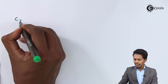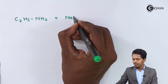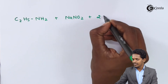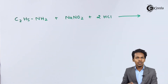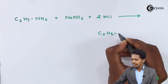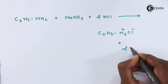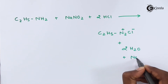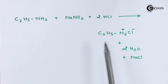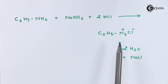For example, consider C2H5NH2, known as ethanamine. If we treat it with NaNO2 and two moles of HCl, HNO2 will be produced in the reaction itself, and the NH2 group will be converted into N2+Cl-. The byproducts are two moles of H2O and NaCl. The product formed is ethyl diazonium chloride, which is a very unstable molecule and will undergo various other reactions, as I will discuss in the next lecture.